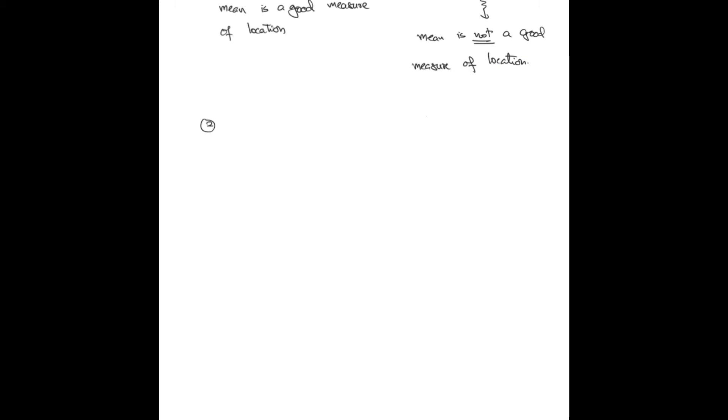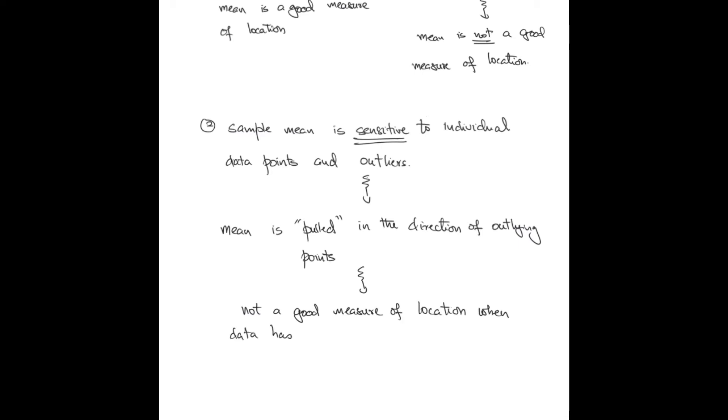The next consideration is that the sample mean is sensitive to individual data points and outliers. If any one of the individual data points is changed, the mean is going to change. Also, if there are outliers in the data set, the mean is going to be pulled in the direction of the outlying points. It is not a good measure of location when the data has outliers.